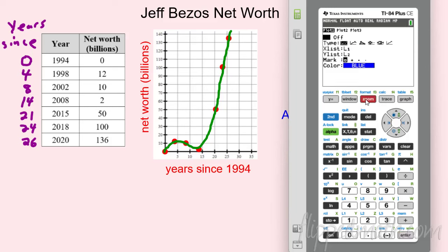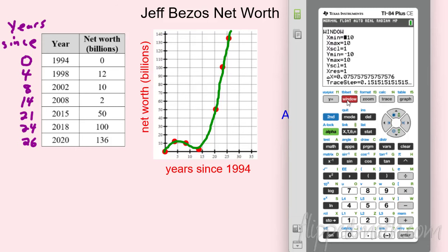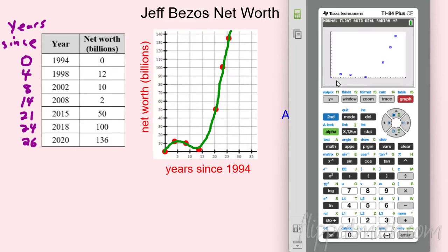Zoom 6 gives a 10 by 10 window, but you can see that doesn't fit our data — some points are missing. Setting the window is one of the more challenging things on the calculator. For x, the minimum is zero and I'll go up to 30 years for a little buffer. For y, the minimum is zero and the max is 150 — since he got up to 136 — and I'll count by tens. Now when I graph I get a much better picture of the data.